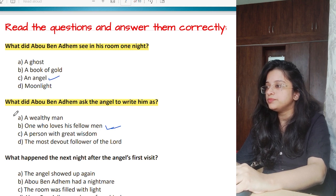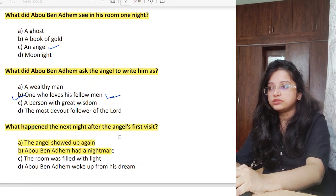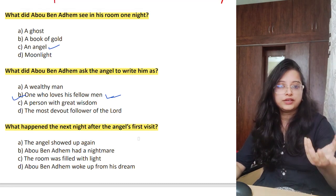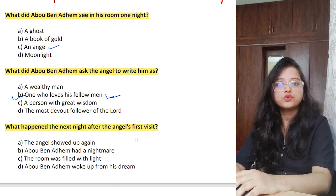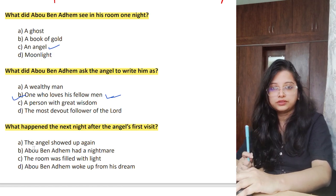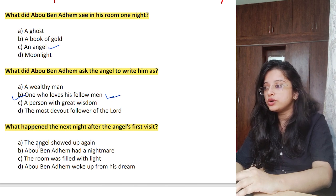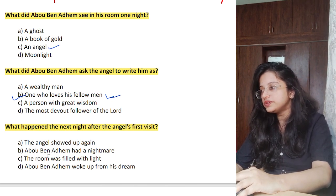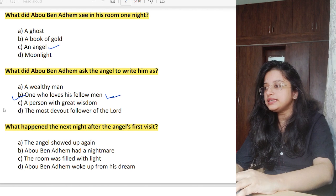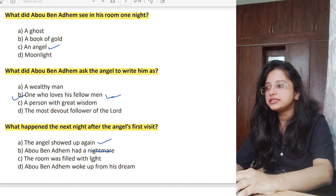Next question: what happened the next night after the angel's first visit? Now, there is one vision and it came twice. Options are: the angel showed up again, Abu Ben Adham had a nightmare, the room was filled with light, or Abu Ben Adham woke up from his dream. We are talking about the next night — the room filled with light refers to the first night, and the dream option is also not correct. Option A, the angel showed up again, is the right answer.